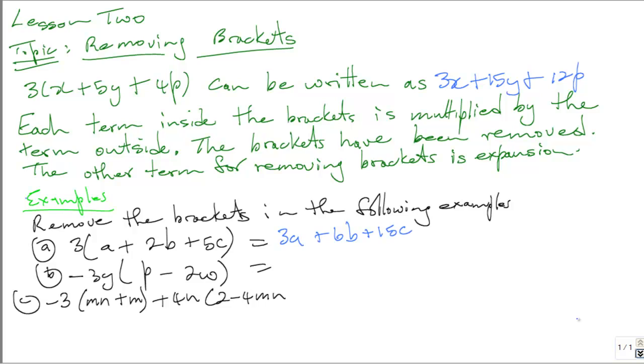The second example is minus 3y times p minus 2w. So we multiply negative 3y by p and that is negative 3py. And then we multiply negative 3y by negative 2w. When you multiply a negative by a negative, you'll get a positive answer.